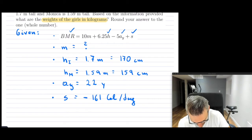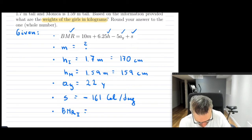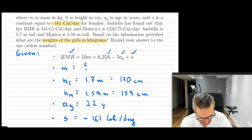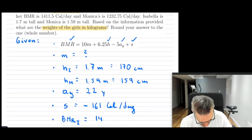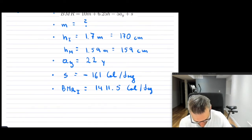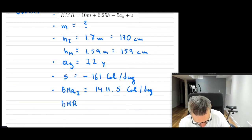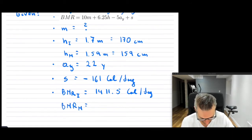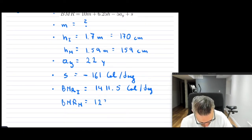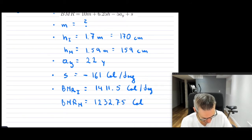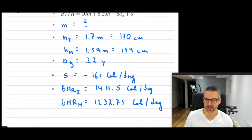Finally, the BMR values: Isabella's BMR is 1411.5 calories per day, and Monica's BMR is 1232.75 calories per day. That's a lot of givens, but that's because we have two individuals, and we're going to find the mass for both.